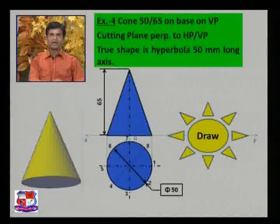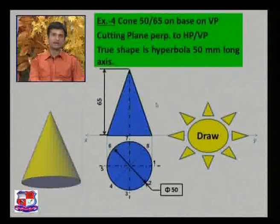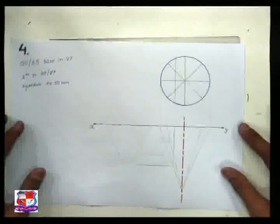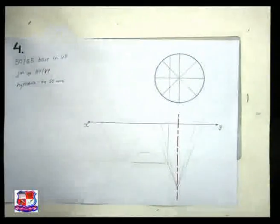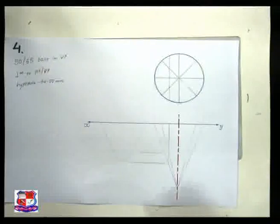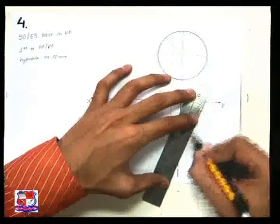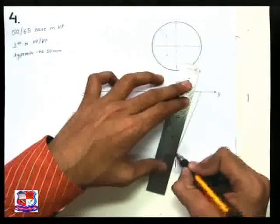The cutting plane is perpendicular to the base. We can obtain a hyperbola by cutting the cone with a plane perpendicular to its base. Locate a point on the axis at a distance of 50 mm from the base, draw a horizontal line that cuts the slant edge, and from that point draw the cutting plane line. Draw the triangle below the XY line and circle above it.